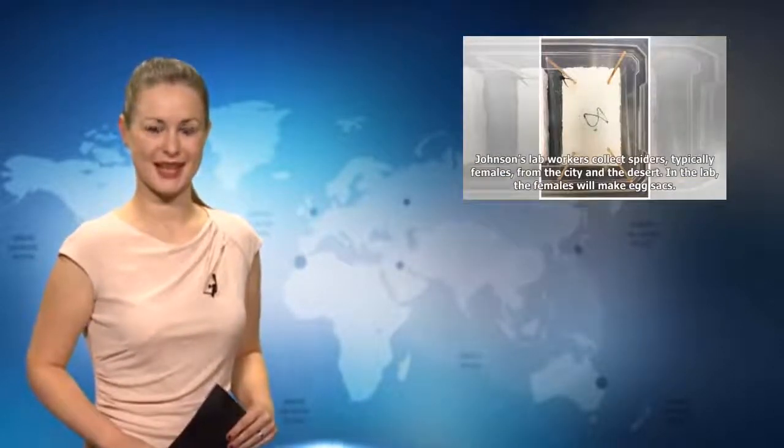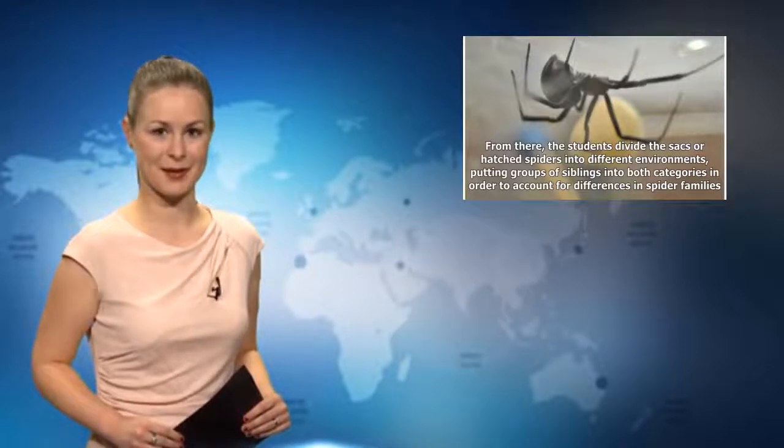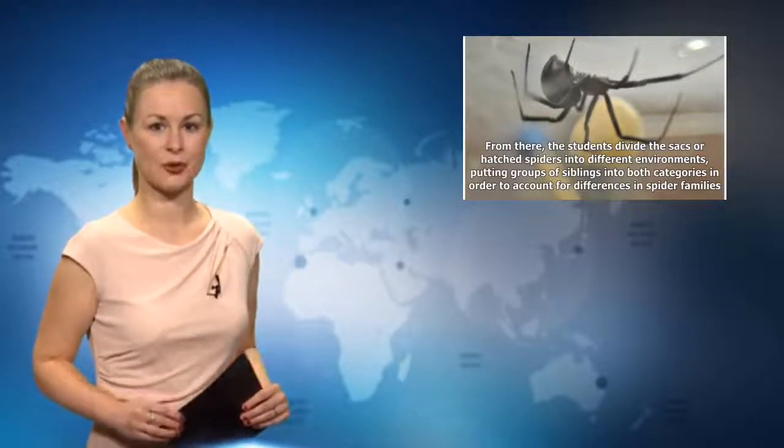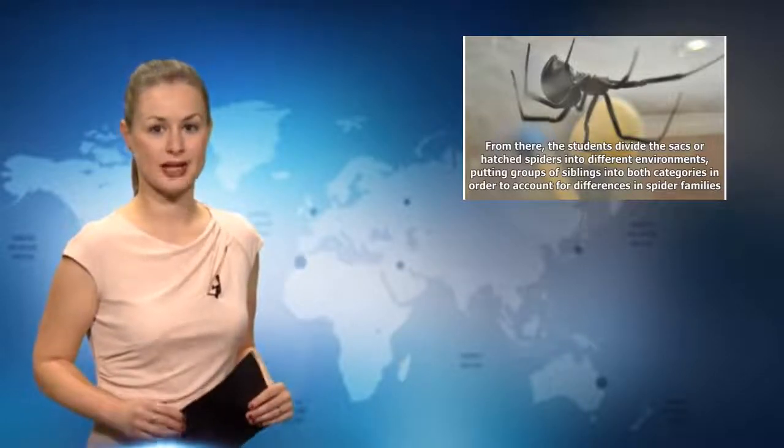Two tables away, a graduate student tapped away at his laptop. Johnson's lab workers collect spiders, typically females, from the city and the desert. In the lab, the females will make egg sacks. From there, the students divide the sacks or hatched spiders into different environments, putting groups of siblings into both categories in order to account for differences in spider families.